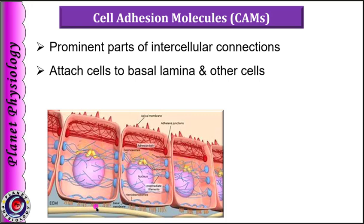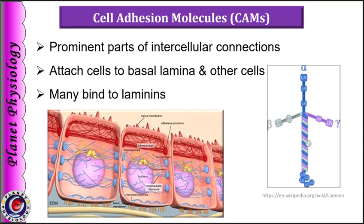As you can note in this picture, here are the cell to cell attachments and these are the cell to basal lamina attachments. Most of the cell adhesion molecules are attached to proteins called laminin. Laminin is a family of crossed-shaped proteins that form a layer in the basal lamina.